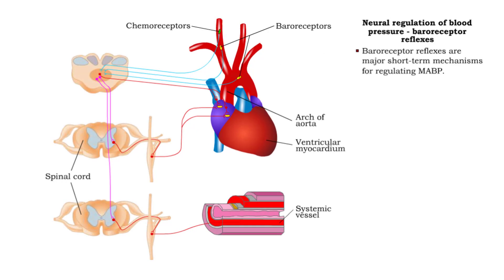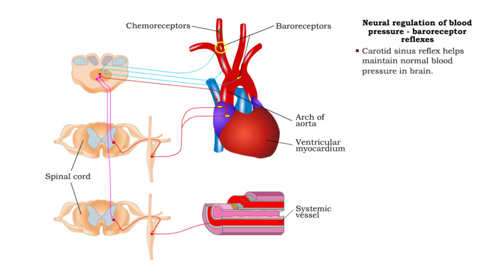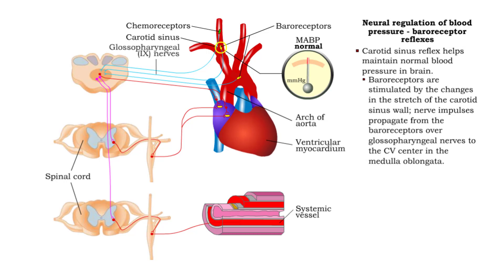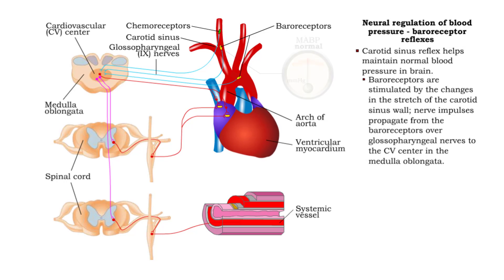Baroreceptor reflexes are major short-term mechanisms for regulating mean arterial blood pressure. The carotid sinus reflex helps maintain blood pressure in the brain. Changes in blood pressure increase or decrease the stretch of the carotid sinus wall and stimulate baroreceptors; impulses are sent over sensory fibers in the glossopharyngeal nerves to the cardiovascular center in the medulla oblongata.